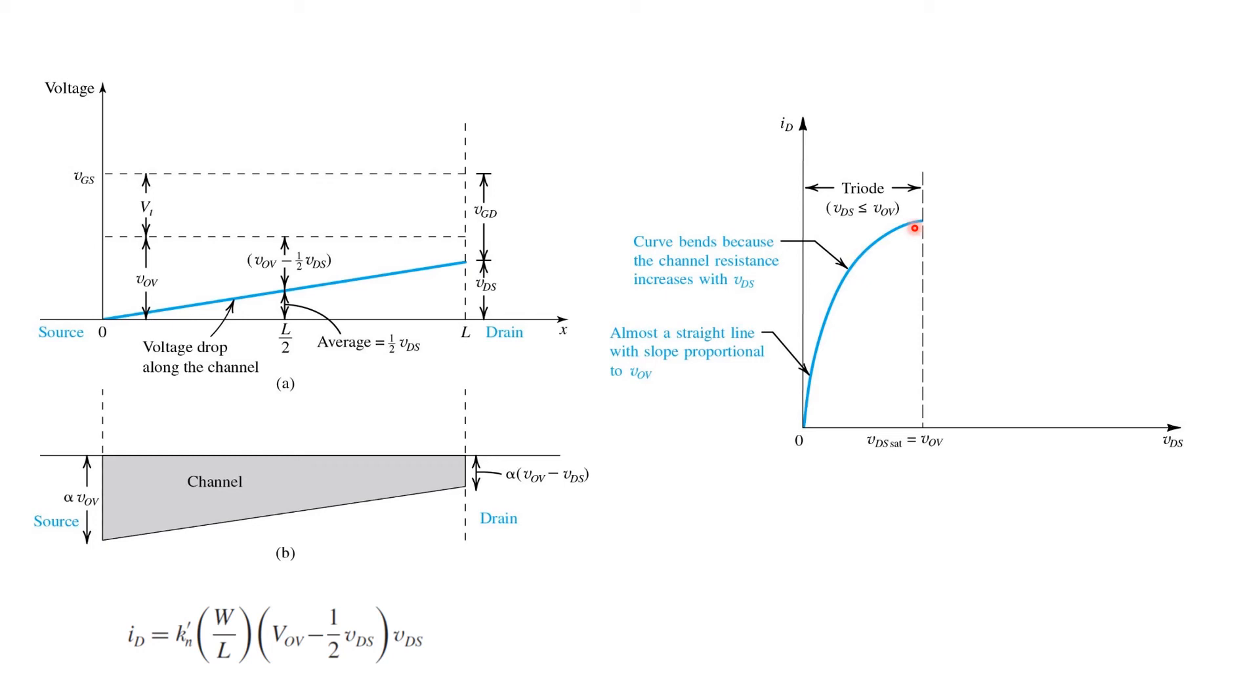Physically, what's happening as we trace this part of the curve is the channel region near the drain is starting to get narrower and narrower, and its associated resistance is increasing, so the curve flattens. Note that as this happens, we still consider that the transistor is in triode mode. It's just that the IV relationship is no longer as linear.